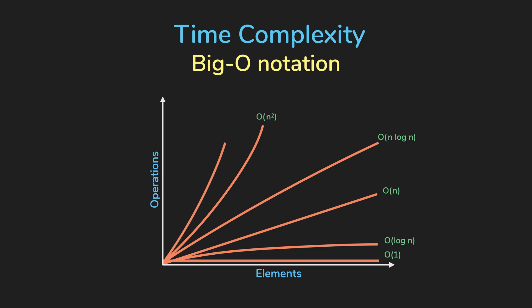Cubic time complexities are even worse than quadratic time complexities. Just think of a loop in a loop in a loop. That would be horrible.